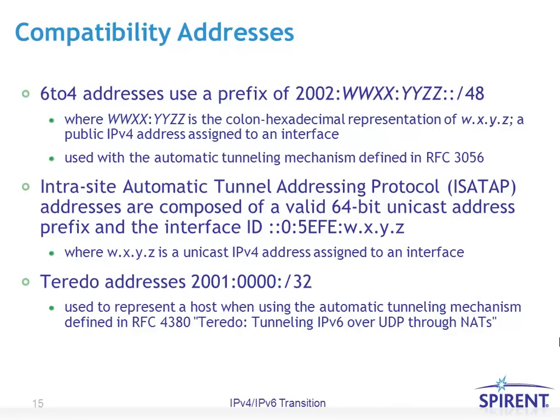Similar mechanisms exist for other protocols that use compatibility addresses, such as ISATAP (Intra-Site Automatic Tunnel Addressing Protocol) and Teredo, which is another mechanism for tunneling in the presence of NATs where we need to run IPv6 over UDP/IP instead of encapsulating directly in IPv4.